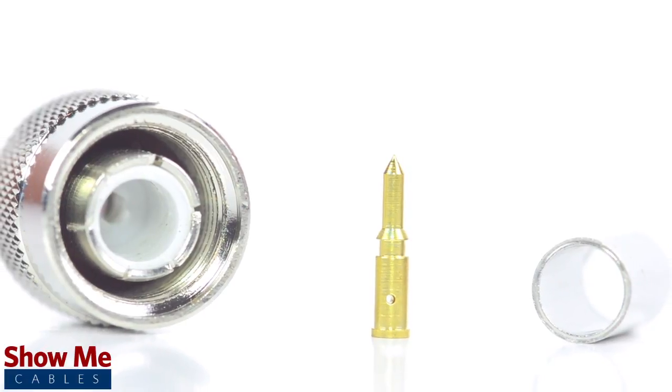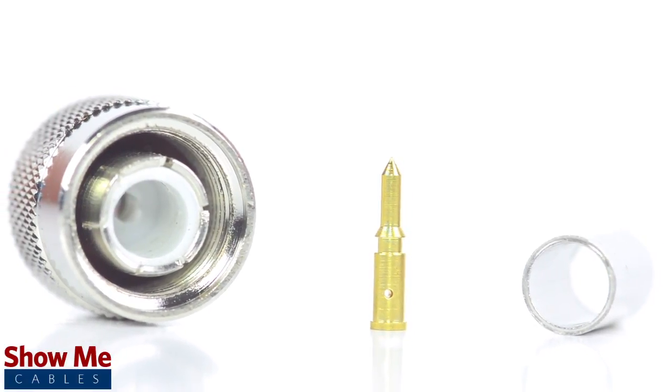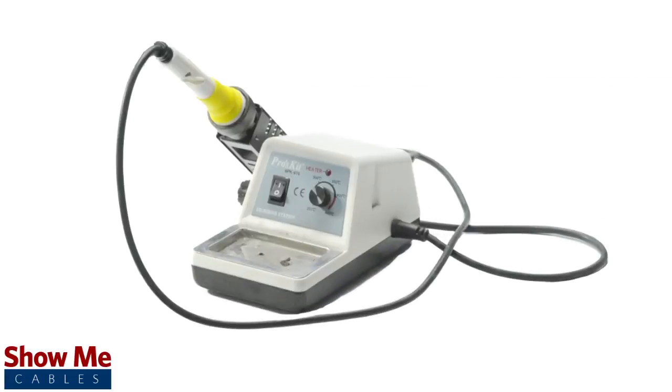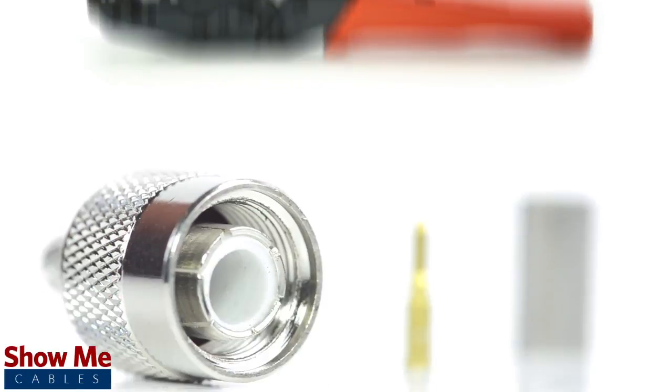The three-piece connector consists of the connector housing, the pin, and the ferrule. For this installation you will need a coax stripper, coax cable, a soldering iron, a crimp tool, and the TNC connector.